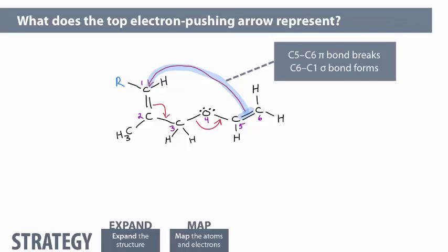In this section, you'll learn to draw the products of a reaction that involves sigma bond migration, given the starting materials and electron-pushing arrows. The key principle to keep in mind is that the electrons from the migrating bond stay with one of the original atoms.